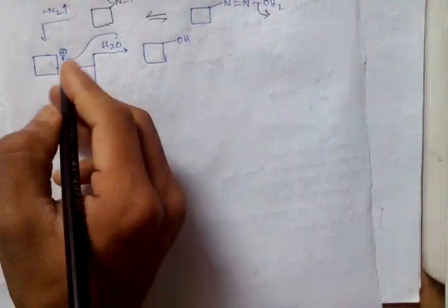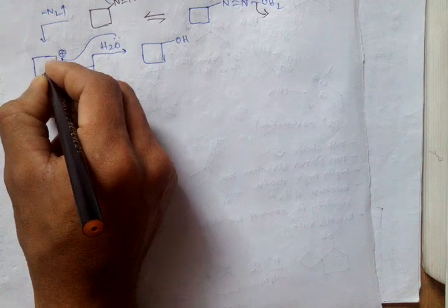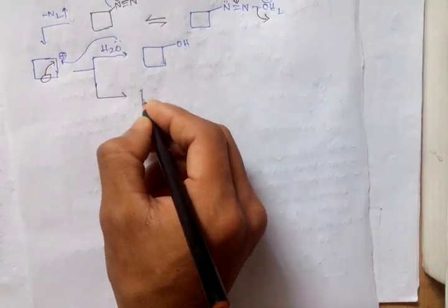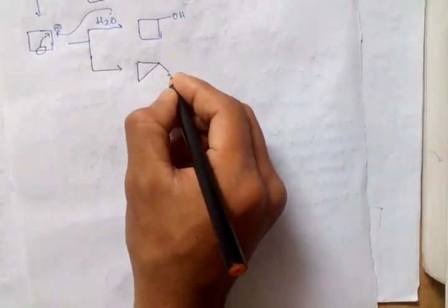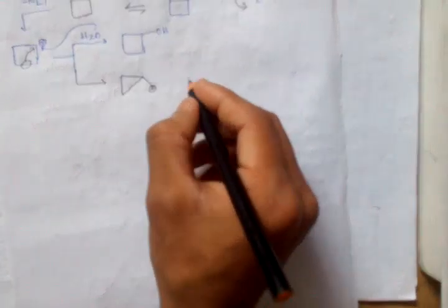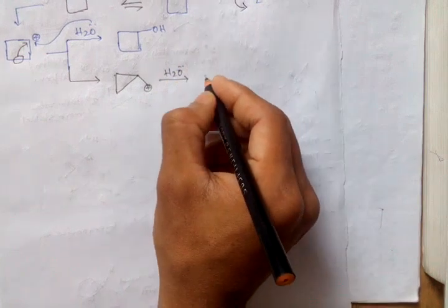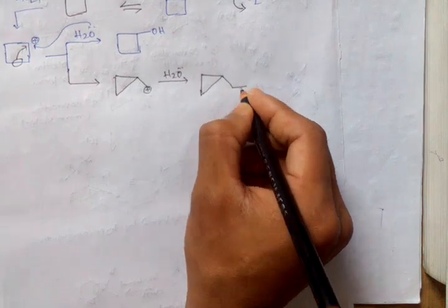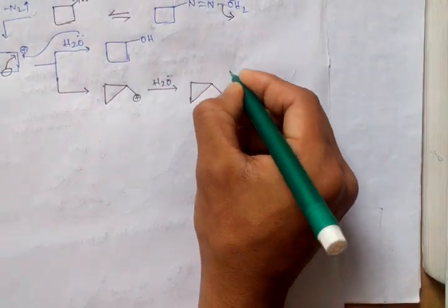Another possibility is when the H2O bond shifts here to give this one with a positive charge here. After that, we attach this water molecule and get this product. That is the ring contractive product.